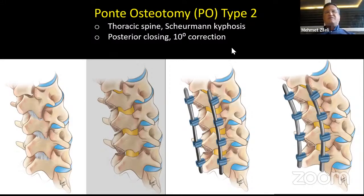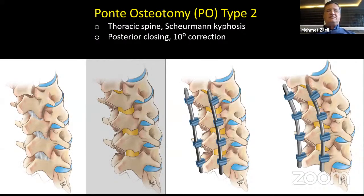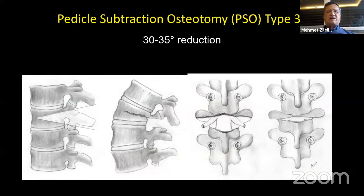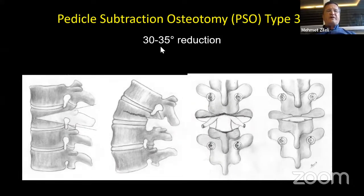What about Ponte osteotomy? Ponte is an Italian orthopedic spine surgeon who is alive. He described a similar osteotomy but with total facet resections and without any anterior opening. Those posterior closings can reduce 10 degrees at each level. It is very similar to Smith-Petersen but with slight differences.